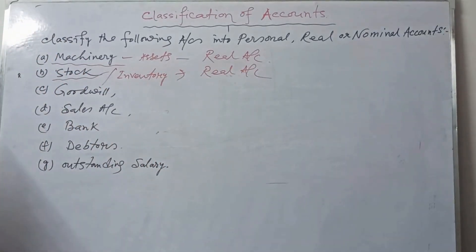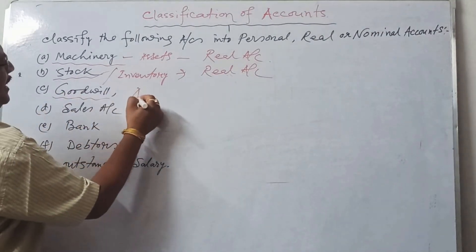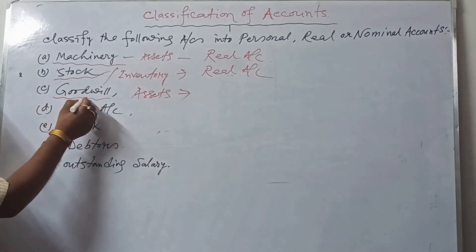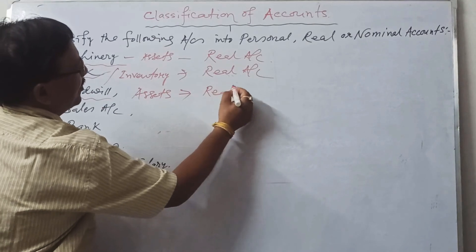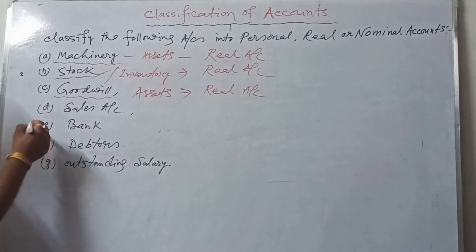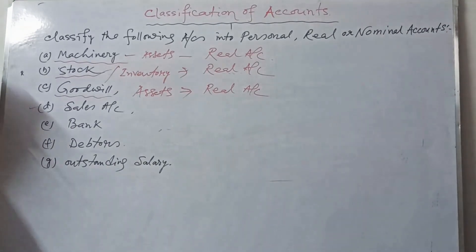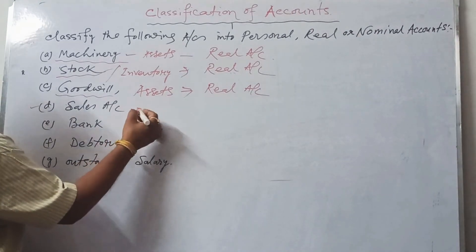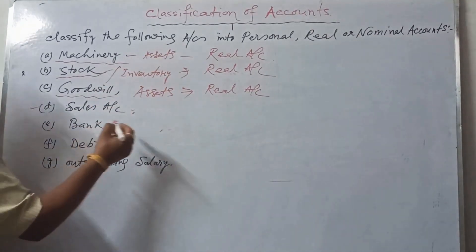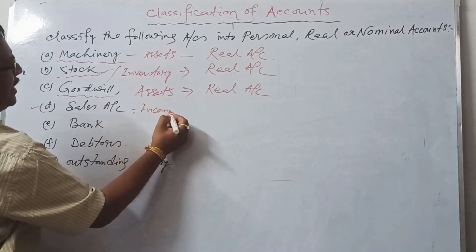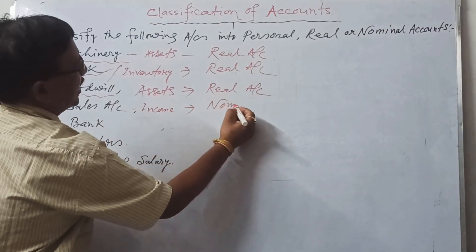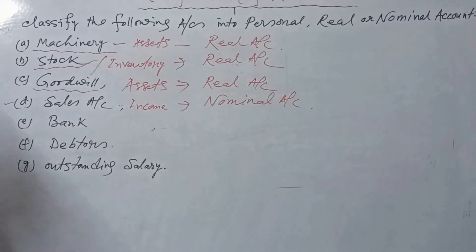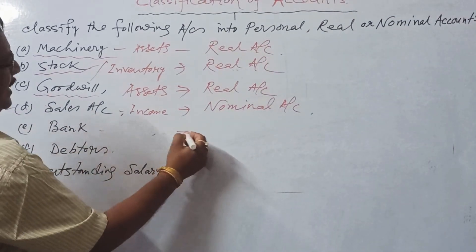Goodwill is an asset — specifically an intangible asset — so it is a real account. Sales is income, so sales is a nominal account. Bank is a real account.